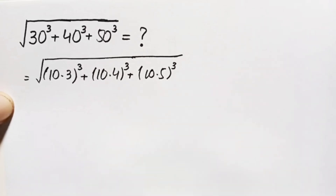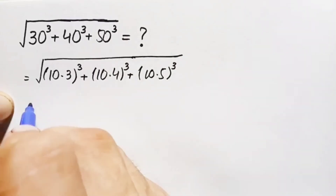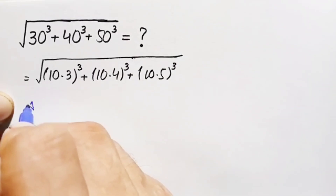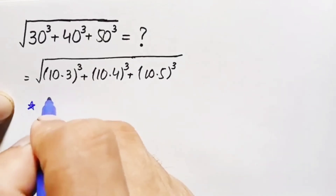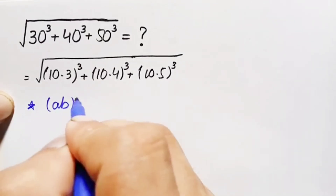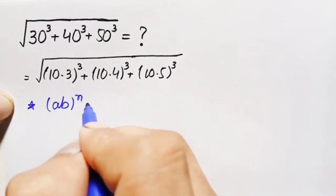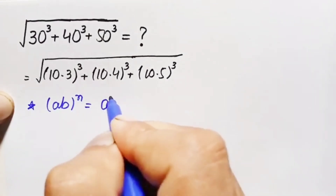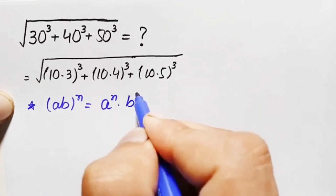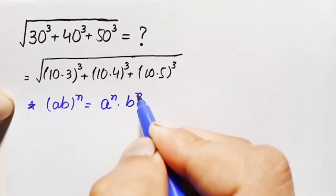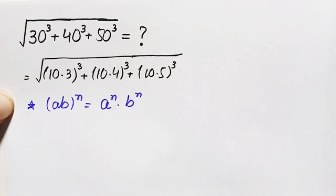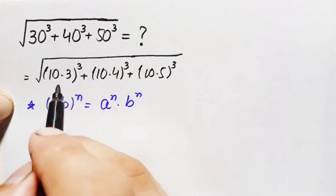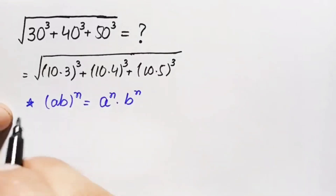Inside these three numbers we will use an exponential identity. We can write (a×b) raised to power n as a raised to power n times b raised to power n. Using this exponential identity, the expression will be transformed.